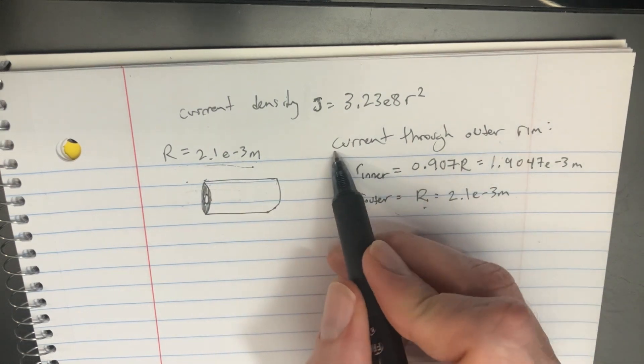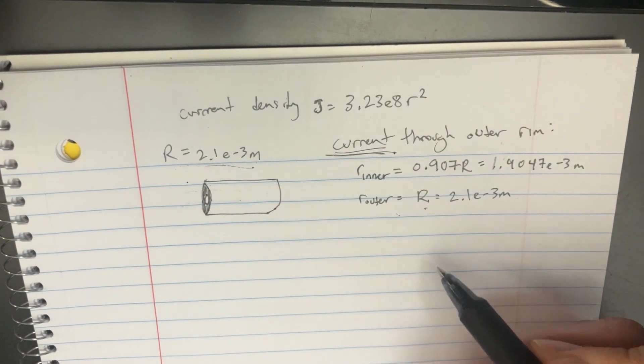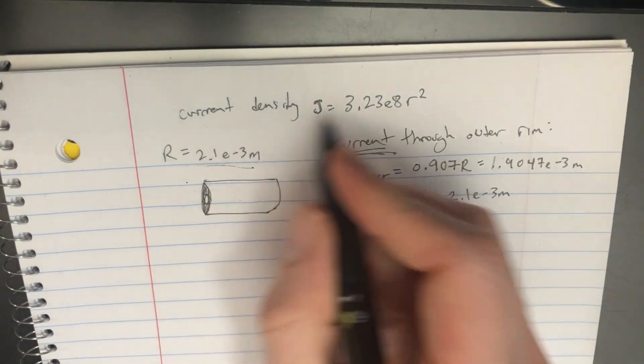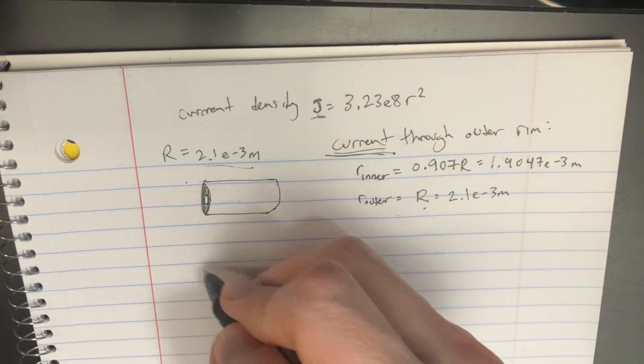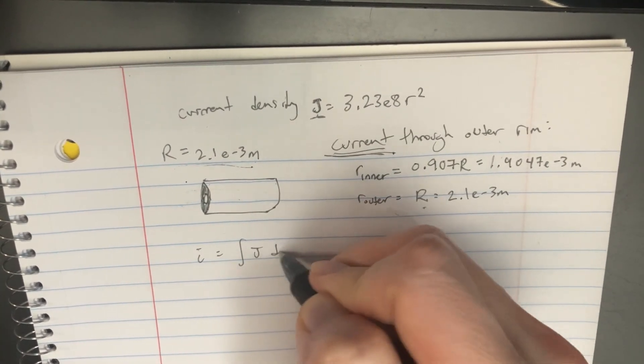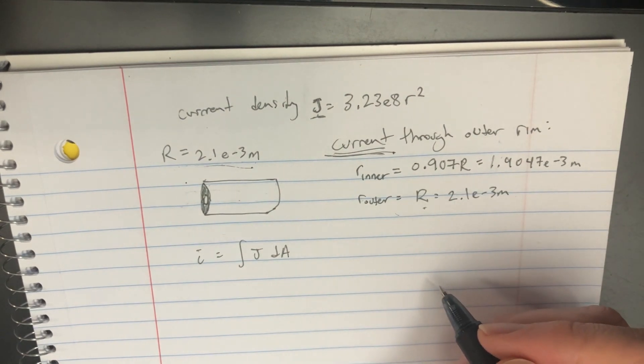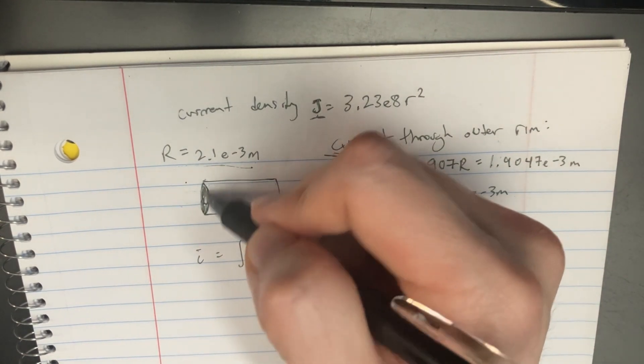Now we're going to find the current. Current is related to j like this: integral of j dA. So we need to find the area element.